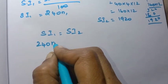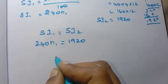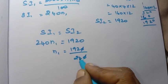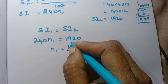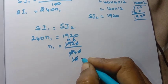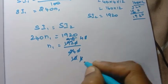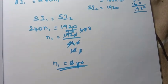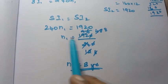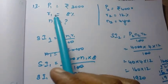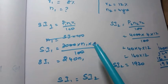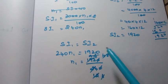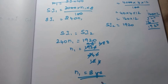240 × N1 = 1,920, so N1 = 1,920 / 240 = 8. Therefore N1 = 8 years. The simple interest on Rs. 3,000 at 8% per annum equals the simple interest on Rs. 4,000 at 12% for 4 years when the time is 8 years.